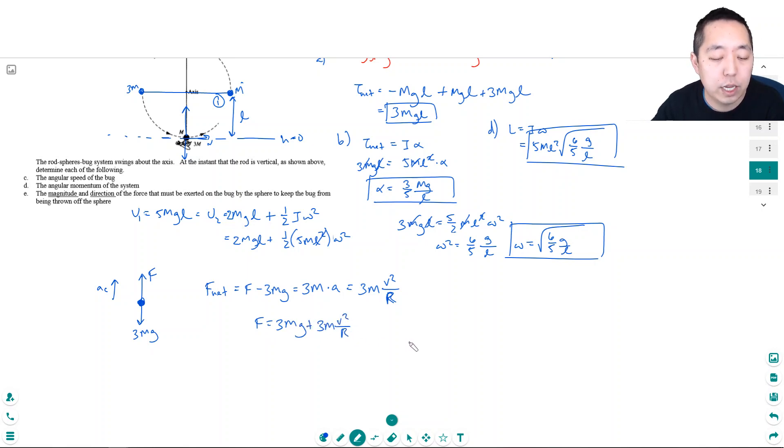So F would equal 3mg plus 3m·v squared over r. Now I have to solve. I know omega, I don't know v, but I know v is equal to omega·r. So v would equal r—in this case it's l—so l times the square root of six-fifths g over l.